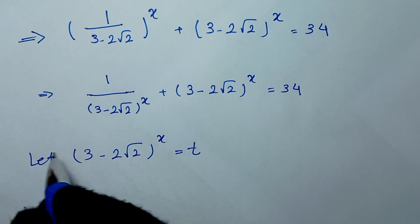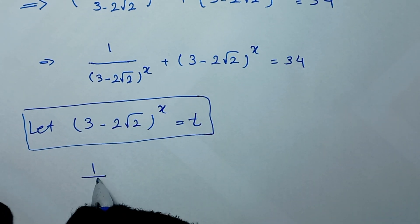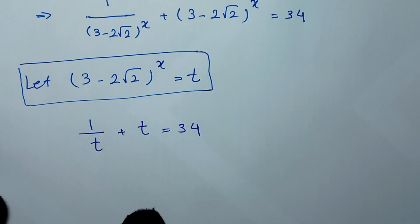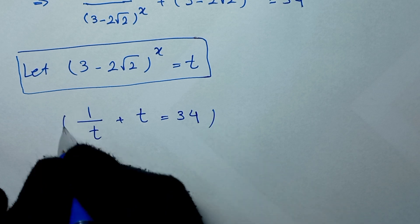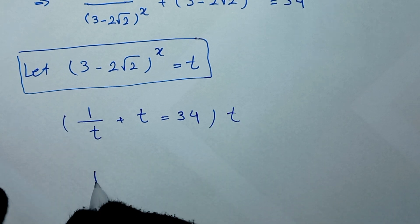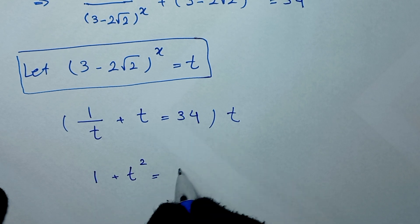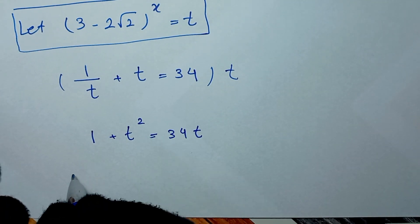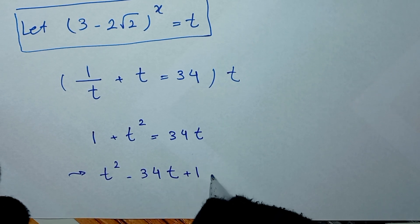With t = (3 - 2√2)^x, we rewrite the equation as 1/t + t = 34. Multiplying both sides by t gives 1 + t² = 34t, and rearranging: t² - 34t + 1 = 0.